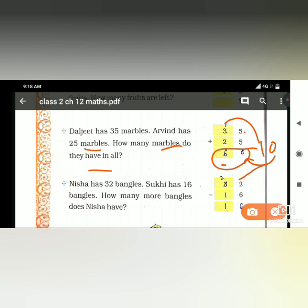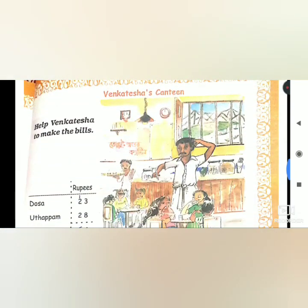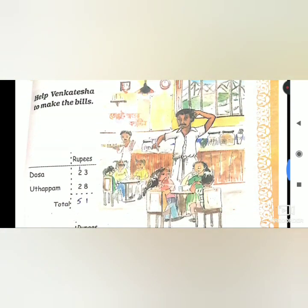Nisha has 32 bangles and Sukhi has 16. How many more bangles does Nisha have? Sukhi has 16 and Nisha has 32. We subtract: one carry, so answer is 16.